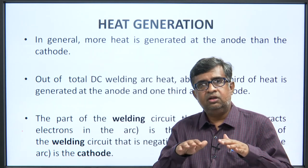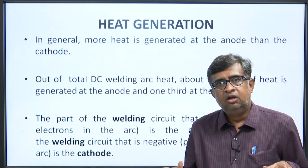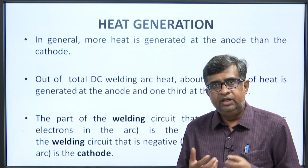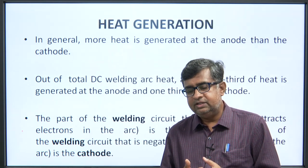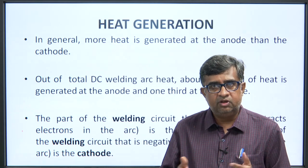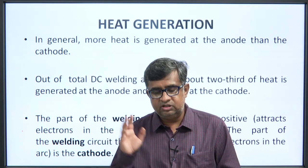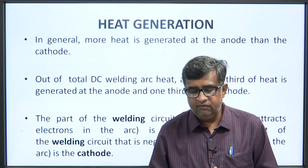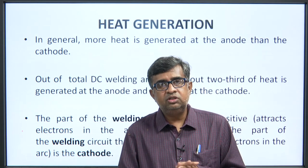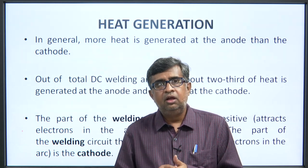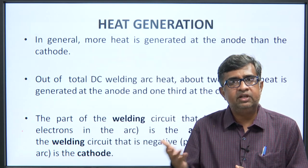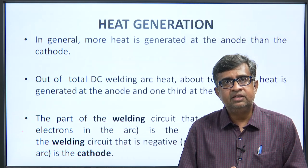From research, engineers came to understand that more heat is generated at the anode. The part of the welding circuit that is positive is the anode, and the part that is negative is the cathode. When you see a positive terminal it is the anode; when you see a negative terminal it is the cathode. Most of the heat generation takes place at the anode.